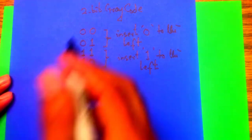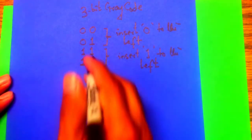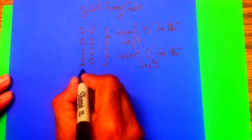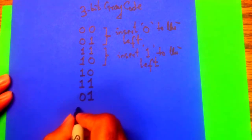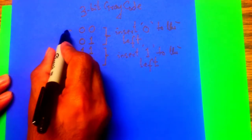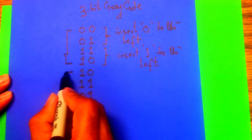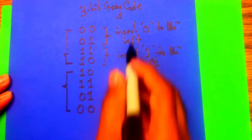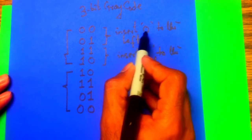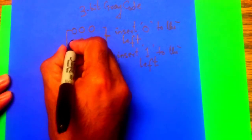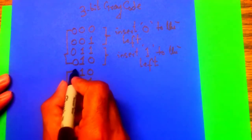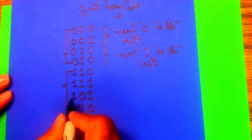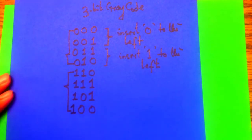You get zero to the first half and one to the second half, giving you your 2-bit gray code. If you want to make it a 3-bit gray code, you take a mirror image of the 2-bit gray code — so you have 1 0, 1 1, 0 1, and 0 0. Notice you have two halves. To the first half insert 0 to the left, and to the second half insert 1, giving you the 3-bit gray code.